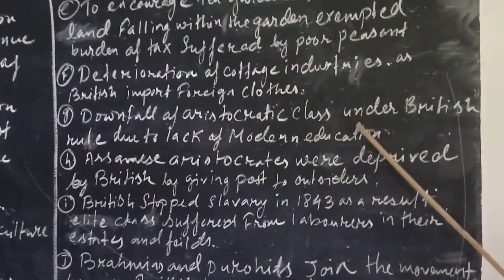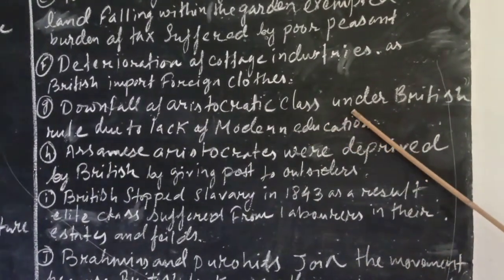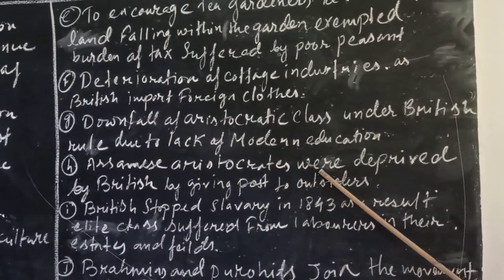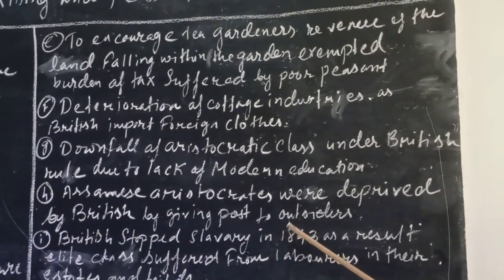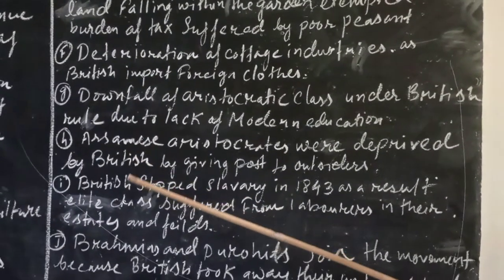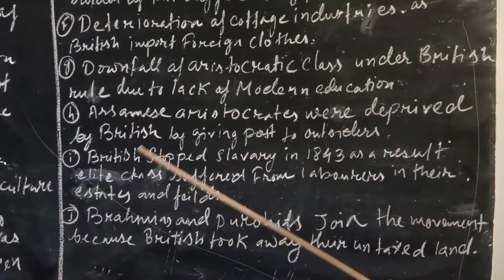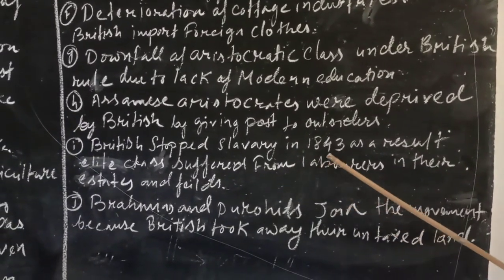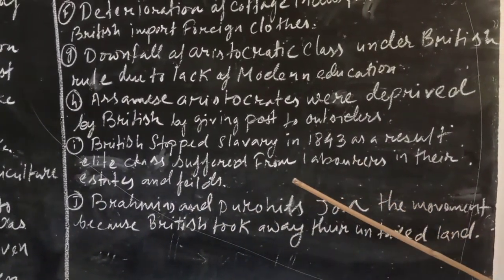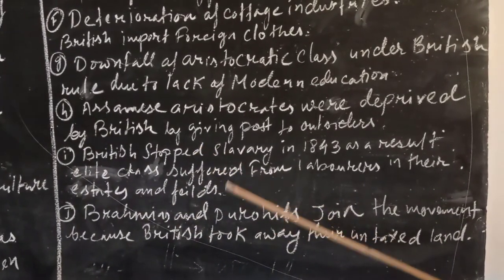The next reason: downfall of the aristocratic class under British rule. Due to lack of modern education, the aristocratic class suffered a downfall. Assamese aristocrats were deprived by the British, who gave posts to outsiders instead. Posts previously enjoyed by Assamese people were taken away. Additionally, the British stopped slavery in 1843, which caused the elite class to suffer from labour scarcity — they had to work themselves in their estates and fields. This was also one of the reasons for the anti-British uprising.